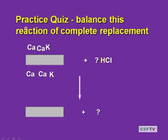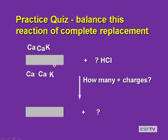Practice quiz: we have a colloid with calcium and potassium adsorbed, and we want to balance the reaction when HCl is added. The first step is to count positive charges. Calcium is plus two, potassium is plus one. With four calciums that's 8 charges, plus two potassiums that's 2 more — a total of 10 positive charges. So there are 10 negative sites. HCl dissociates as a strong acid to H+ and Cl minus. Since H+ is plus one, you need 10 hydrogens.